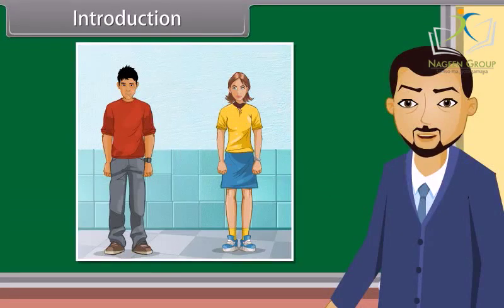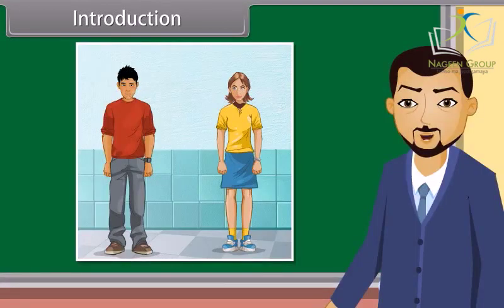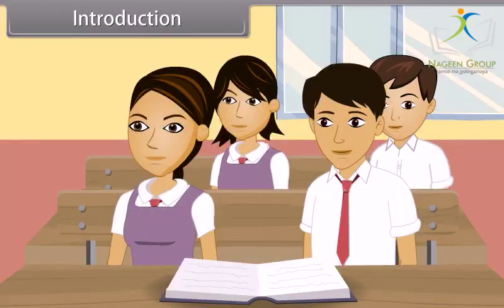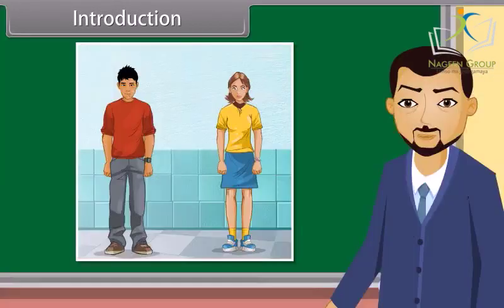Have you ever wondered why girls are different from boys? Girls and boys are different because they have different body structures. But this difference lies in their different reproductive organs, and these organs secrete different hormones in males and females. You are right, Rahul. Let us examine in detail the reproductive organs in males and females.